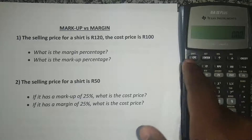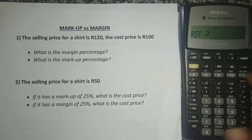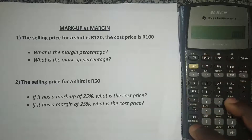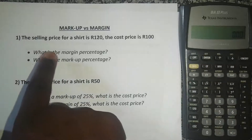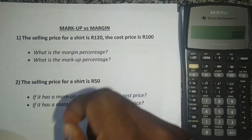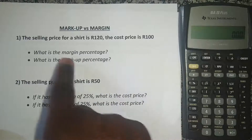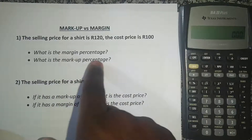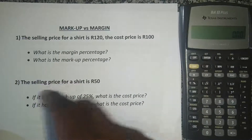Our calculator is on. Let's just clear our calculator — second function, resetting it, then plus/minus, then enter, then CE/C to clear my screen. The first question tells us that the selling price for a shirt is 120 Rand and the cost price is 100 Rand. What is the margin percentage? That's the first question. And the second one is: what is the markup percentage?